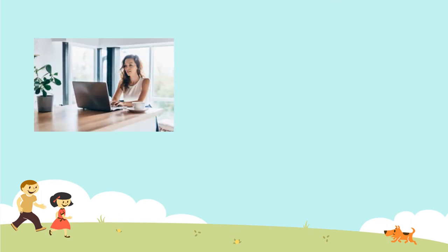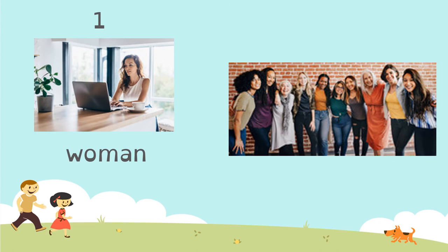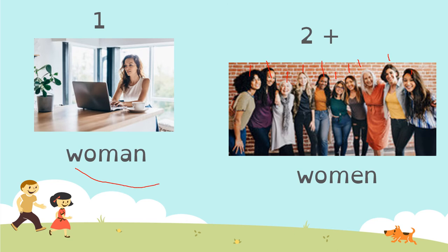What about this? This is a woman. In singular we say woman. But if we have two or more, we say women. So let's count. We have one, two, three, four, five, six, seven, eight, nine, and ten women. A woman or one woman, and ten women.